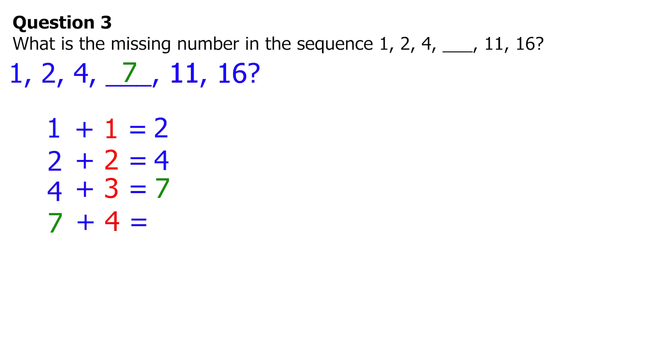7 plus 4 equals 11. Now this is the part where we start to prove that our theory is right by proving that 11 is the next number. Then 11 plus 5 equals 16 will fully prove our theory. So the missing number in the sequence is 7, and we got that by adding these consecutive numbers to the sequence.